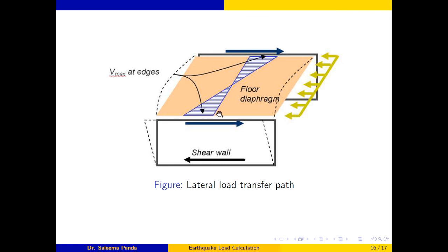The diaphragm transfers uniformly distributed lateral forces from the edges of slabs to frames and shear walls. If a lateral force acts on a floor, the slab bends and the shear force at the edges is transferred to the shear wall — which is why it is called a shear wall. The lateral load transfer path goes from the floor diaphragm to the shear wall at the edges, where the maximum shear (Vmax) acts as the reaction force.